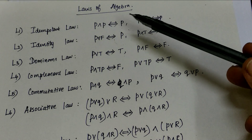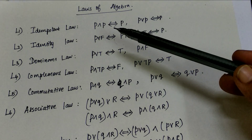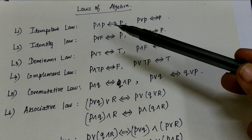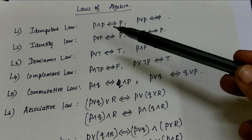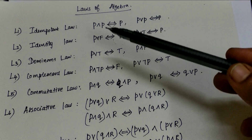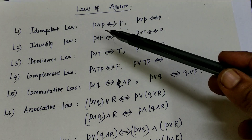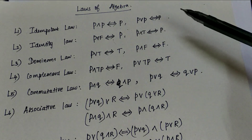These are the basic laws of algebra. First one: idempotent law. Idempotent law gives the conjunction and disjunction between the same statement. P and P equals P; P or P is P.